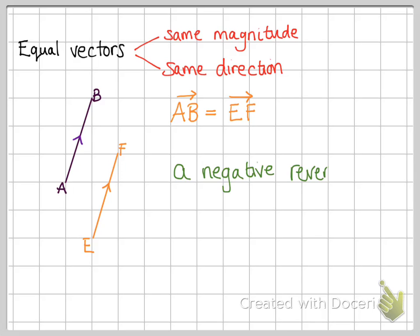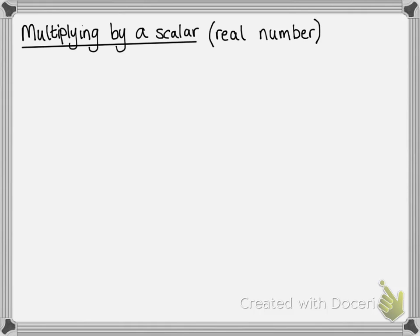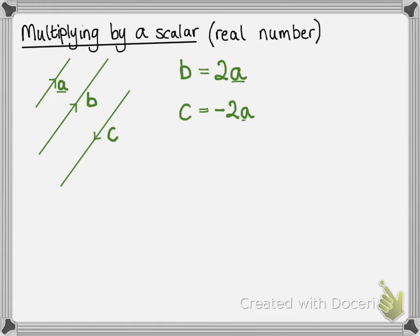We also get negative vectors, and that reverses the direction of the vector. We can also multiply vectors by a scalar amount. So here we have vector A, and then vector B, which is twice as long as A, so it's been multiplied by 2, and vector C, which is twice as long as A but in the opposite direction. So we write these as B equals 2A and C equals minus 2A. Since I'm handwriting these, they should have those little lines underneath them.